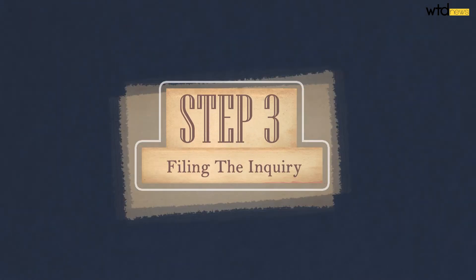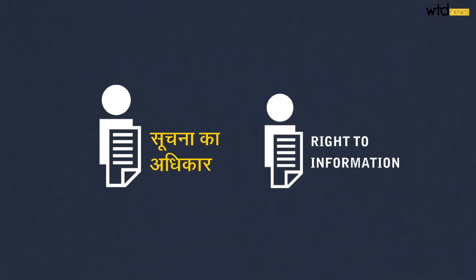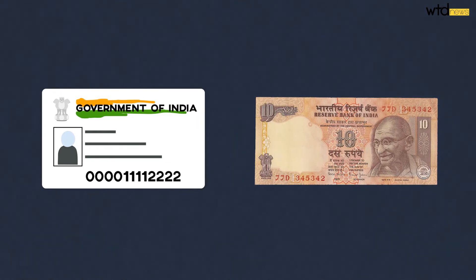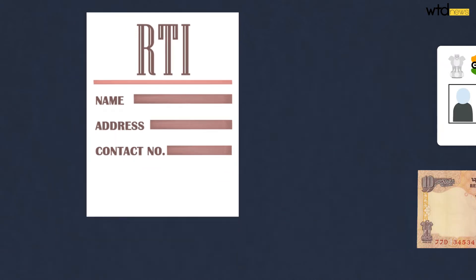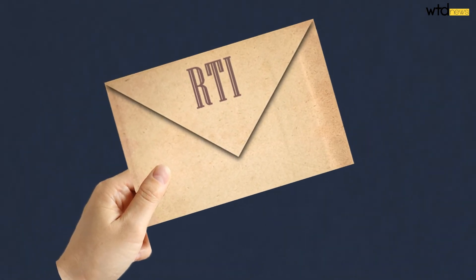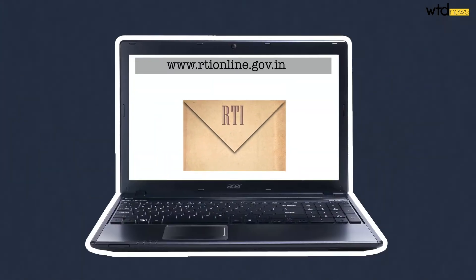Step 3: Filing the enquiry. An RTI can only be filed in Hindi or English and has to include a government-issued ID and a processing fee of rupees 10. It can simply be written on an A4 size sheet with all these details and sent by speedpost or hand-delivered to the appropriate department. You can even do it online.